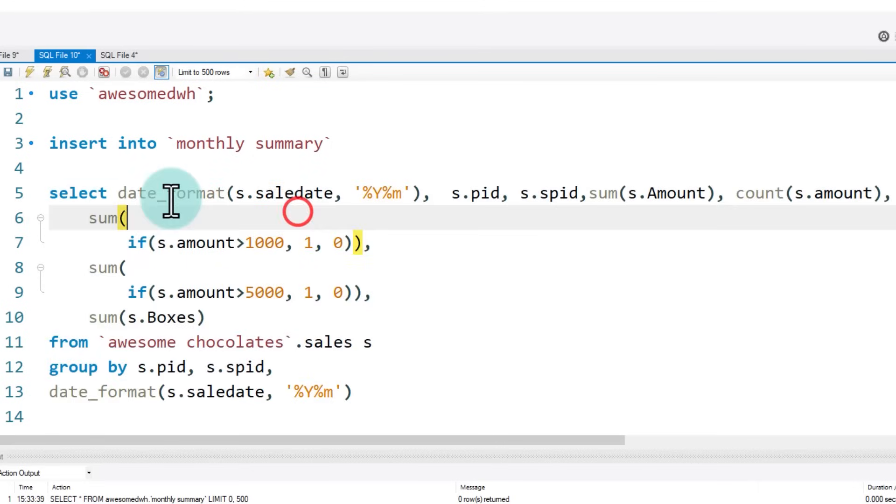All we are doing is date formatting the sale date into year month format. So that we generate 2021-01, 2021-02 like that for each month. And then PID and SPID. PID stands for product ID and SPID stands for sales person ID. And then we are totaling the amount column, counting the amount column. So that basically gives me how many shipments are there. Each row is one shipment.